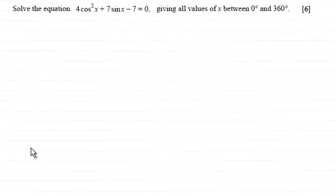Hi there. Now, in this question, we're asked to solve the equation 4 cos squared x plus 7 sine x minus 7 equals 0, giving all the values of x between 0 degrees and 360 degrees.